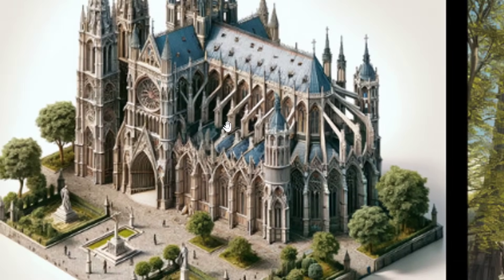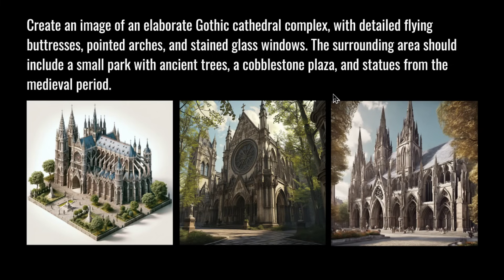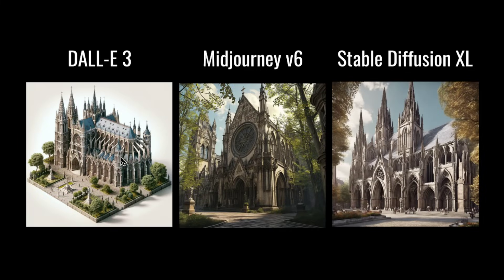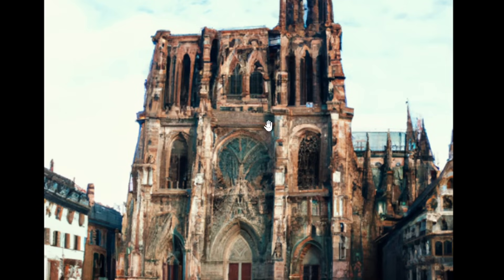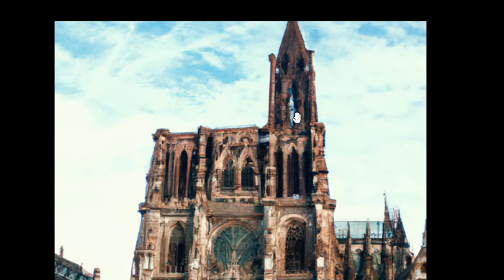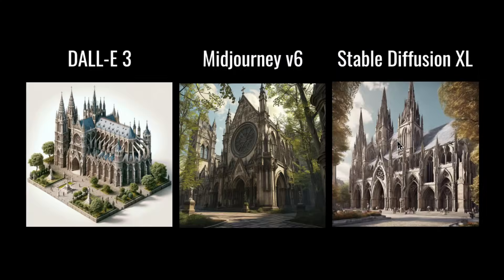I don't see stained glass windows in any of them. Three different styles for the same prompt — which do you prefer? The first isometric image was DALL-E 3, the photograph style was MidJourney version 6, and Stable Diffusion XL had more of a painting style. I'm definitely seeing common traits: DALL-E 3 seems to produce illustration-type images, MidJourney is more photorealistic, and Stable Diffusion XL is a mix between the two. DALL-E 2's version is a busted-up gothic complex — big difference from the current models.